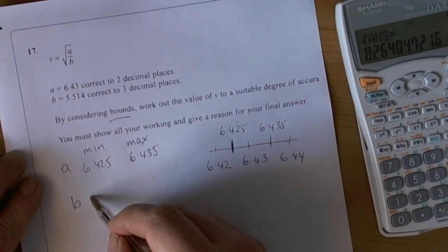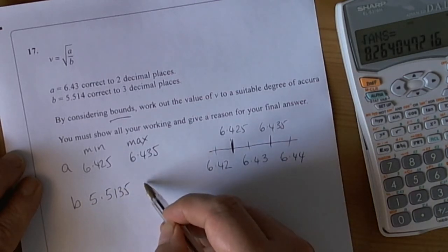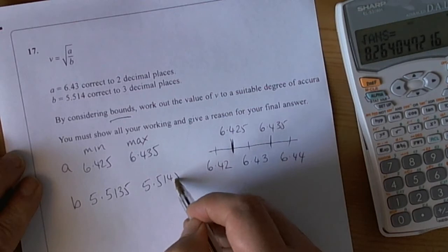For B we do a similar approach and we find that the minimum value would be 5.5135 and the maximum value would be 5.5145.